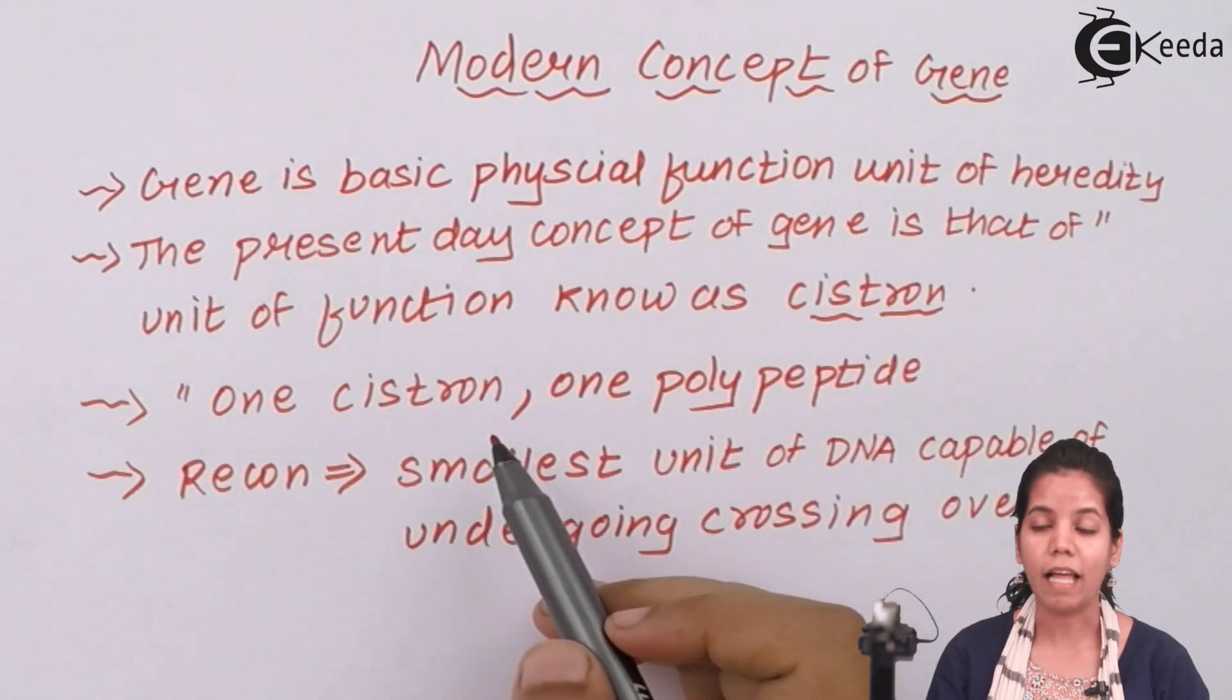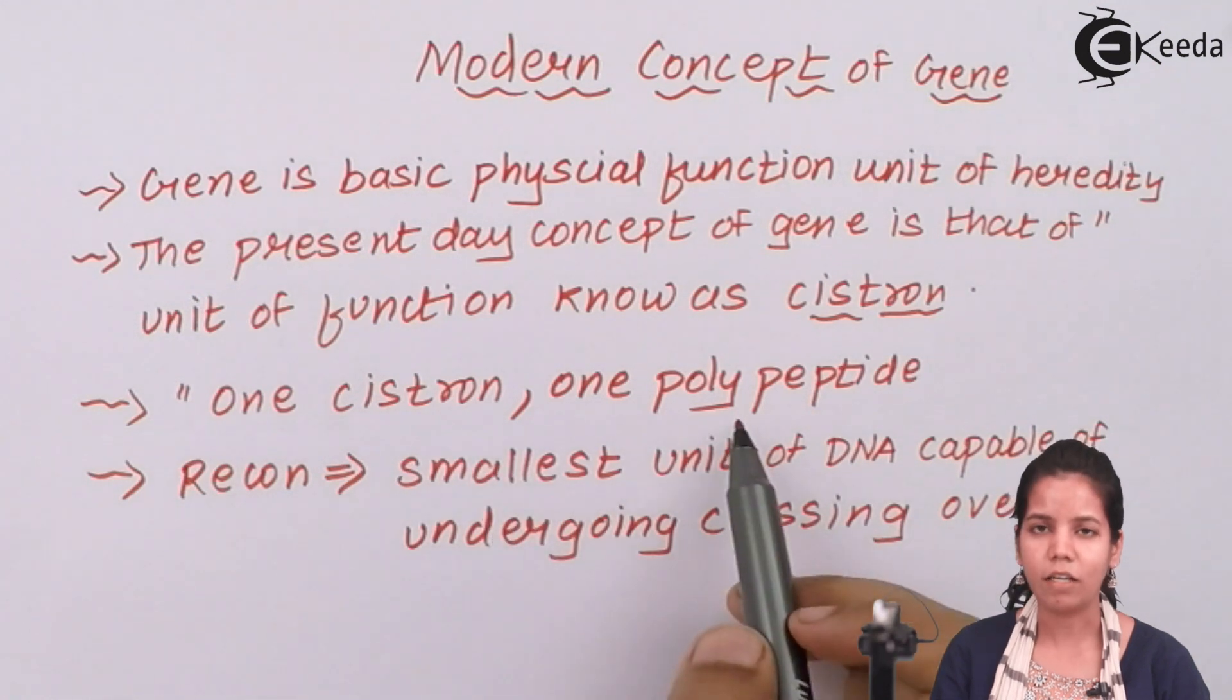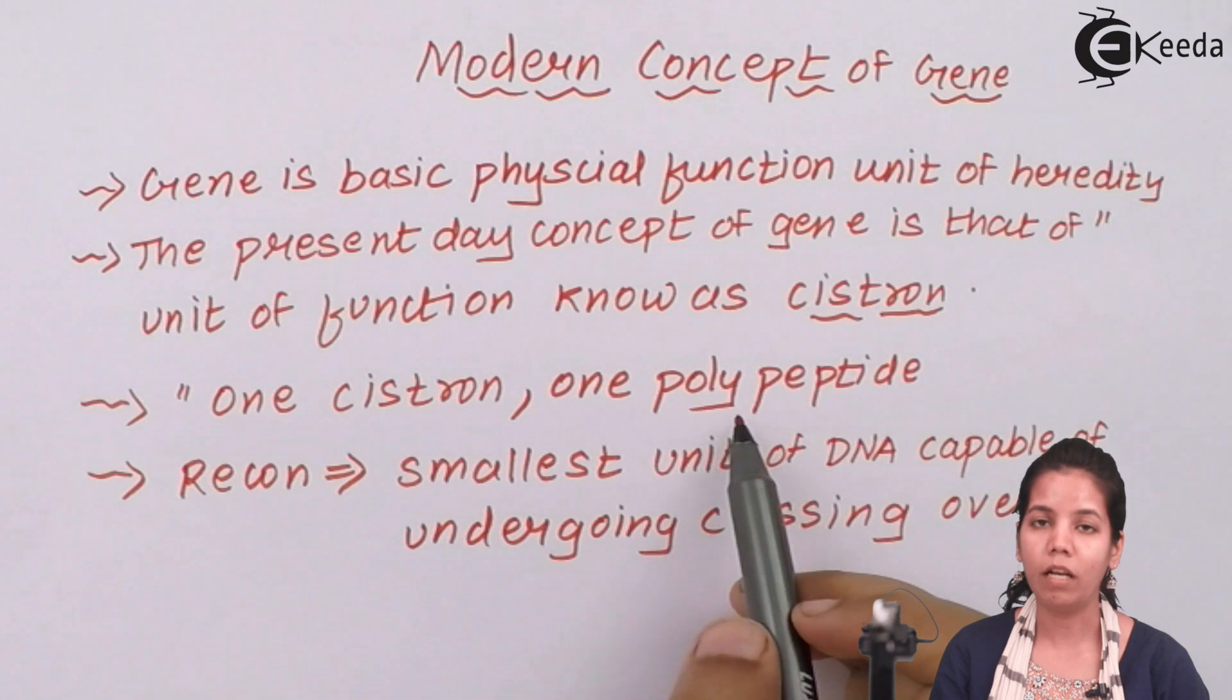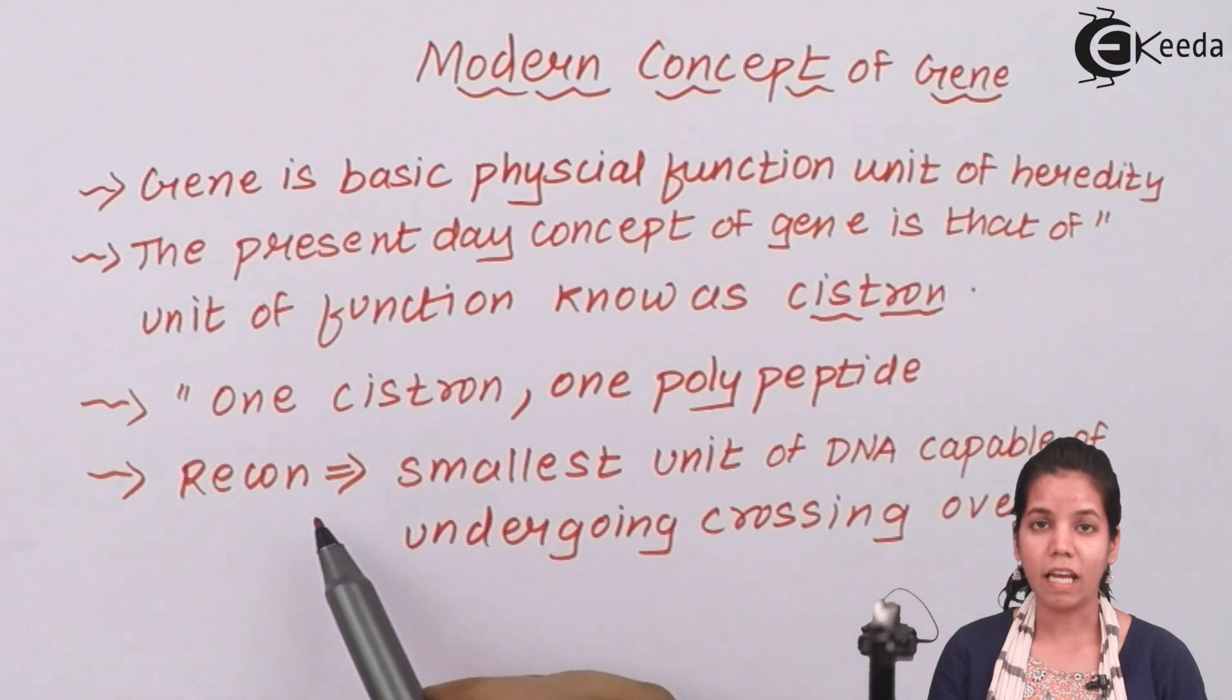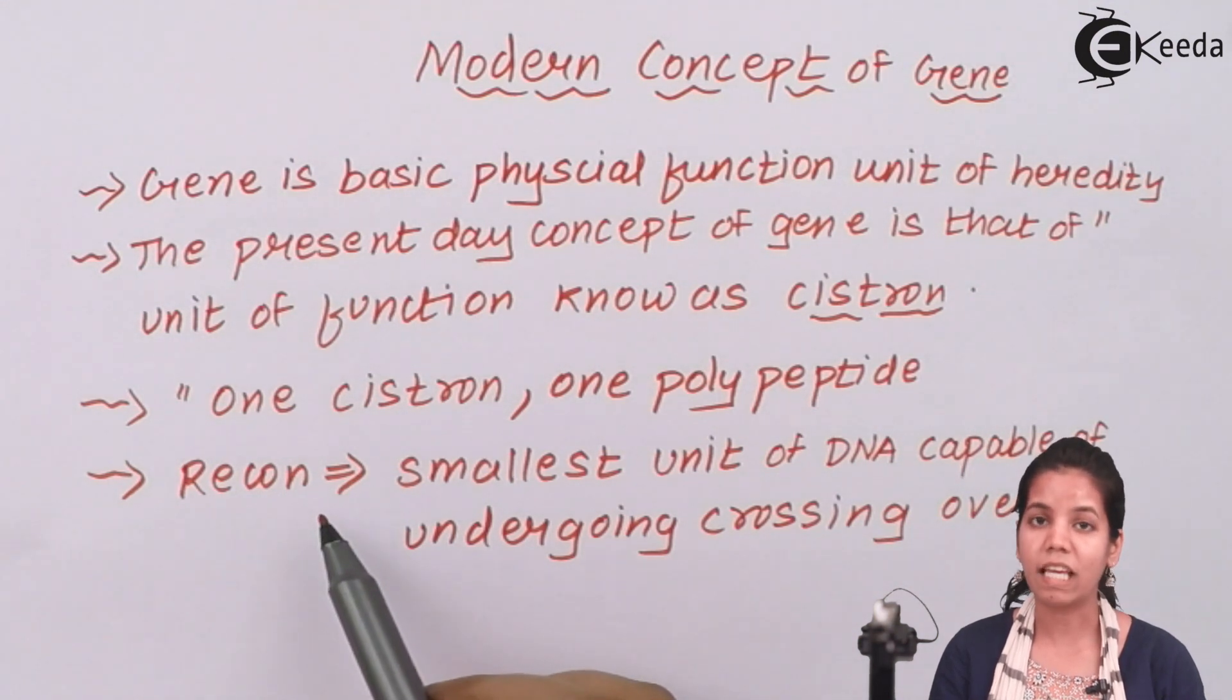The simple theory is that one cistron is related or correlated to one polypeptide, means one cistron will help the formation of one protein or one trait. Now genes can be of two types or there are two variations which genes can show.